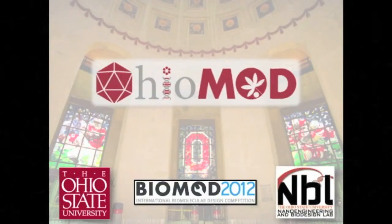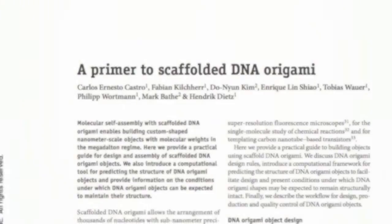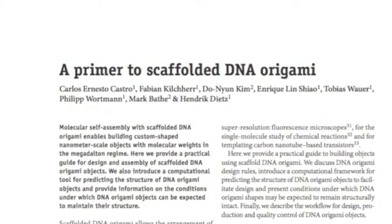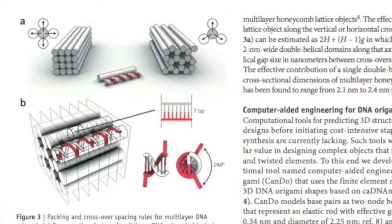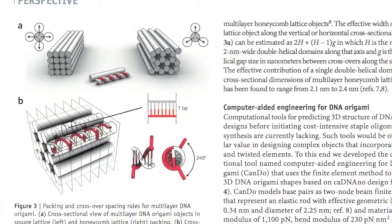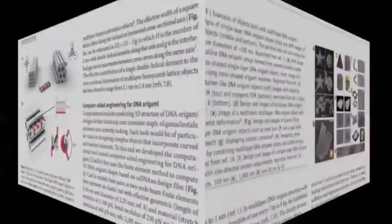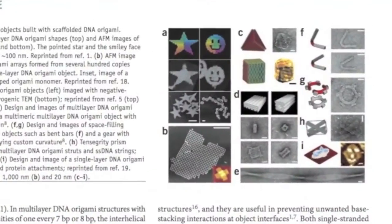DNA origami is the process of creating 2D and 3D nanoscale objects by strategically folding DNA. Researchers have successfully made everything from smiley faces to functional drug delivery machines. The possibilities are similarly endless.